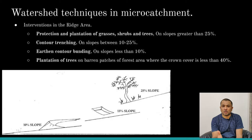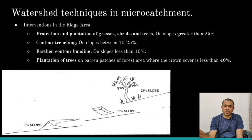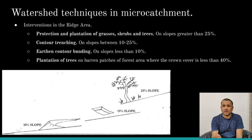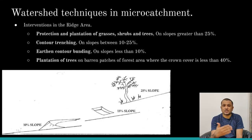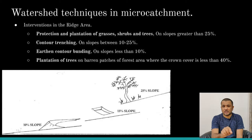The first category is intervention of flow of water on the slope line or ridge area. The first technique is to create a protective layer by planting trees, shrubs, and grasses along the sloping area. This protective cover can be established only when the percentage of slope is greater than 25%. When the slope increases beyond that, we should go for another technique called counter trenches.